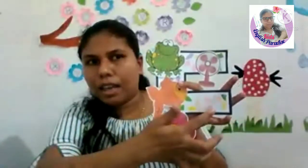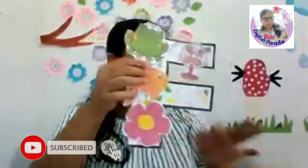Now say: F is for frog. F is for fish. F is for flower. F is for fan. Right? Okay.